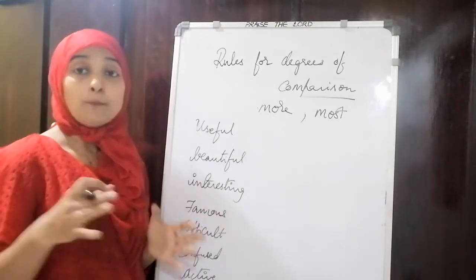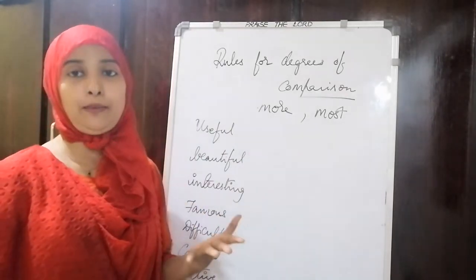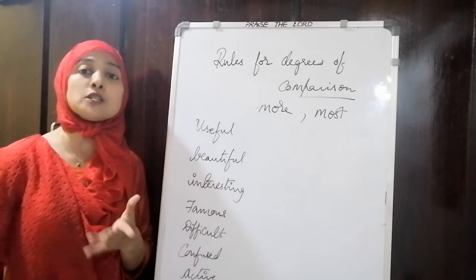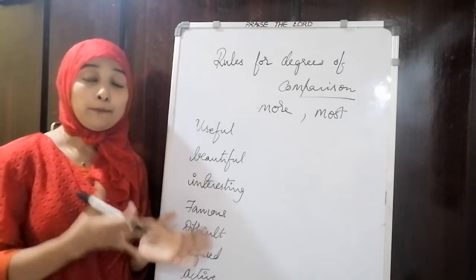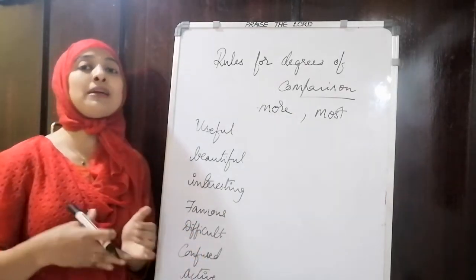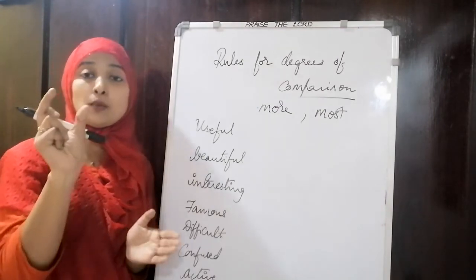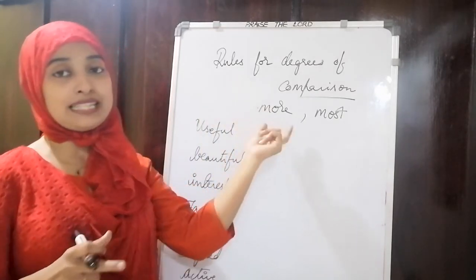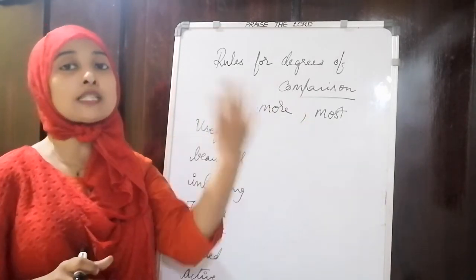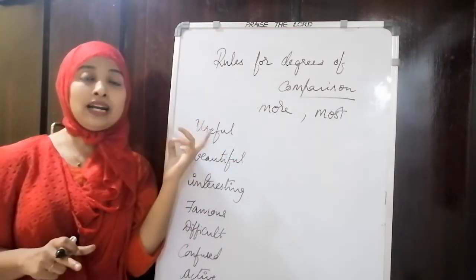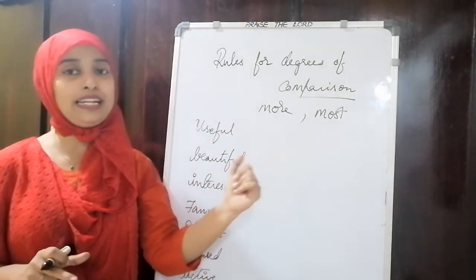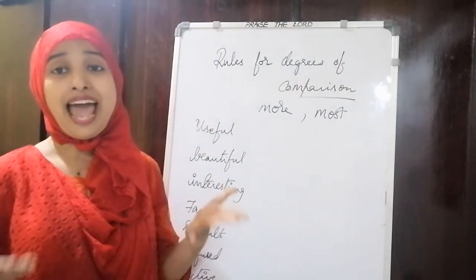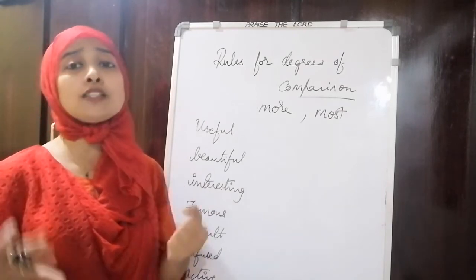Similarly: 'famous', 'more famous', 'most famous'; 'popular', 'more popular', 'most popular'; 'difficult', 'more difficult', 'most difficult'; 'confused', 'more confused', 'most confused'; 'active', 'more active', 'most active'. You will not change these words with ER and EST — instead, 'more' and 'most' are placed before the base form.